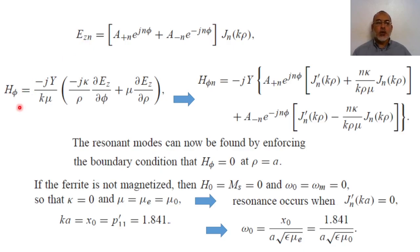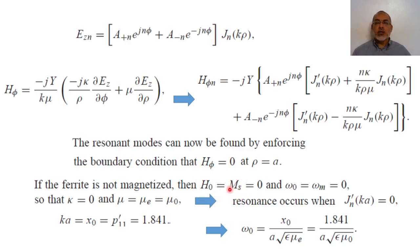The resonant frequency is obtained from the condition H_phi = 0 at rho = a, according to the boundary condition that we have a perfect magnetic conductor on the side wall of the ferrite resonator, while we have a perfect conductor at the top and bottom. For the special case when the biasing magnetic field H_naught is zero and the saturation magnetization is zero — the unbiased ferrite — mu equals mu_naught, kappa equals zero, and H_phi of mode n equals zero at rho = a when J'_n(ka) = 0.